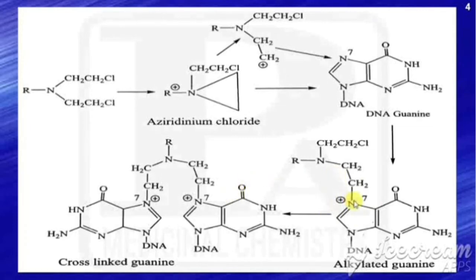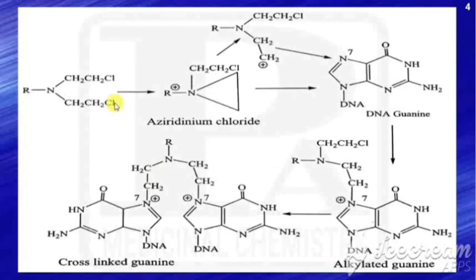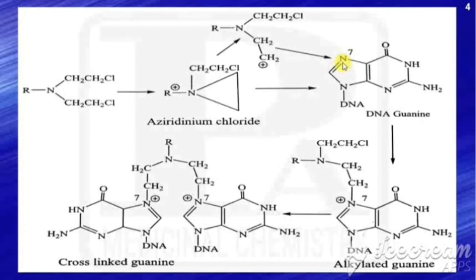The aziridinium ion combines again with another guanine to form a guanine cross-link, leading to the three processes: miscoding, depurination, and cleavage of the imidazole ring. The nucleophilic moieties of target molecules include: the seventh nitrogen atom of guanine, first and third nitrogen atoms of adenine, third nitrogen atom of cytosine, and sixth oxygen atom of guanine.